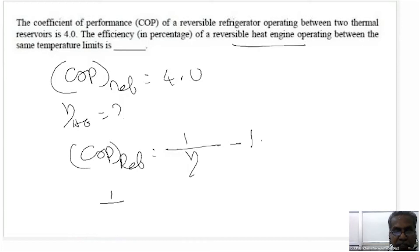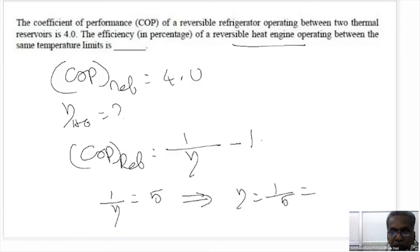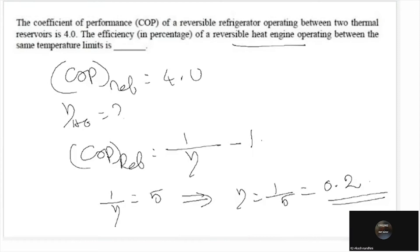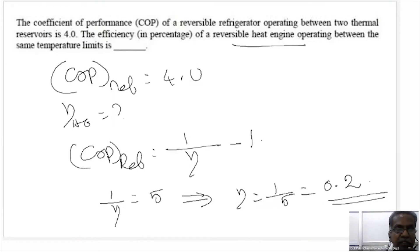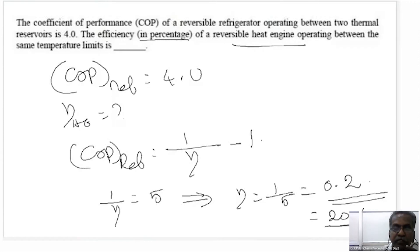Eta equals 1 divided by (COP of the refrigerator plus 1), which is 1 divided by 5. That is equal to 0.2. In terms of percentage, it is 20 percent — that is the efficiency in percentage.